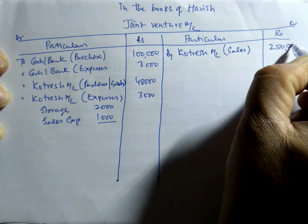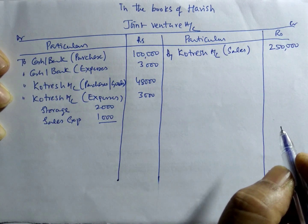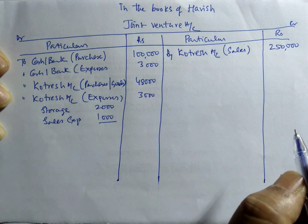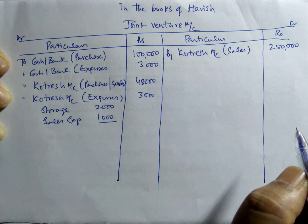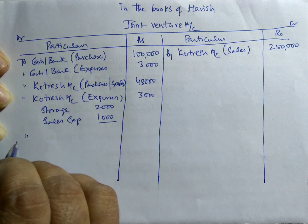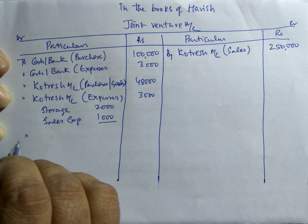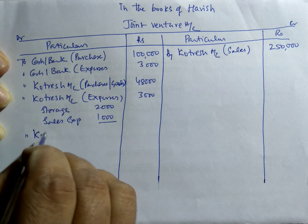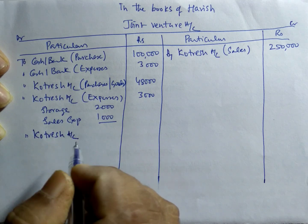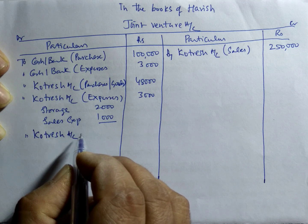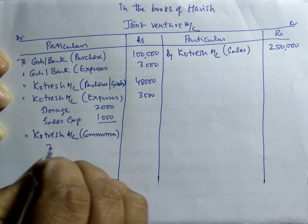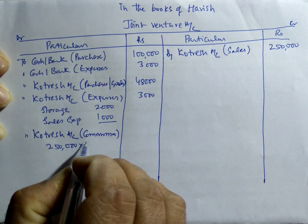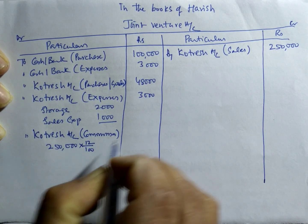Rs. 2,50,000 should be credited to the joint venture account, because Kotresh will receive the sales value of Rs. 2,50,000. As Kotresh has sold the entire goods, there is no question of closing stock. As Kotresh is selling goods for Rs. 2,50,000, he will get commission. We must debit it to the joint venture account as Kotresh account commission. Commission is Rs. 2,50,000 × 12/100 = Rs. 30,000.